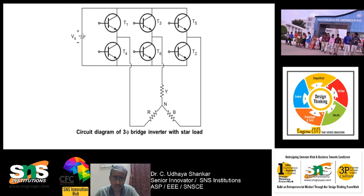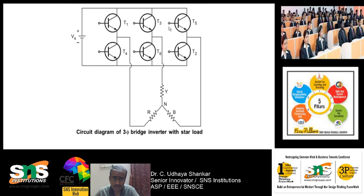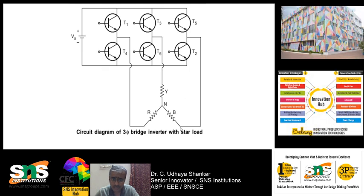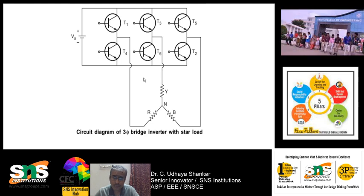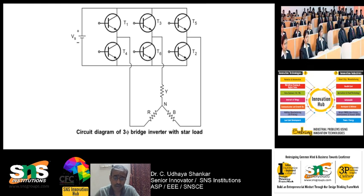This is the inverter circuit. You have a DC supply and there are six transistors total. A DC supply is connected with six transistors and a three-phase load is connected to these transistors. If you properly switch T1 to T6 on and off, you will get a three-phase output waveform. In single-phase output there is only one phase — R-phase — whereas in three-phase output you have three phases R, Y, and B.